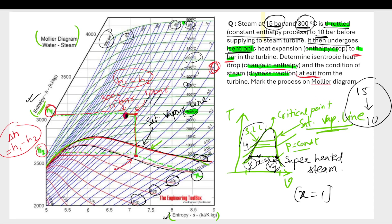To find the dryness fraction at exit (at 1 bar), you look at where that final point falls relative to the constant dryness fraction lines on the diagram and read off the corresponding x value. In this lecture we discussed the Mollier chart, explained how to read its pressure, temperature, and dryness fraction lines, and solved a problem involving throttling followed by isentropic expansion.